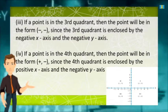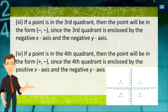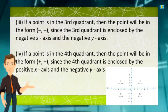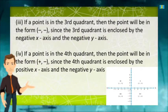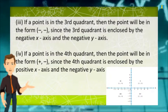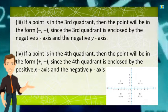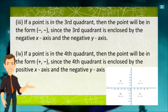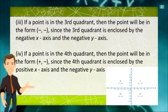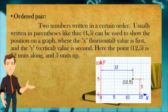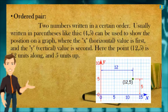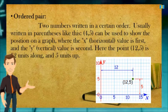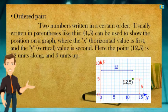If a point is in the fourth quadrant, then the point will be in the form (positive, negative), since the fourth quadrant is enclosed by the positive x-axis and the negative y-axis, as shown in the figure. Two numbers written in a certain order, usually written in parentheses like (4, 5), are called an ordered pair.